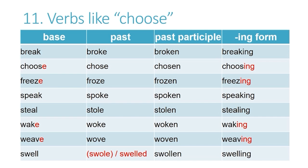Verbs like 'choose' shift to the same vowel sound in the past and the past participle. The difference is that in the past there is no UN ending, but in the past participle there is an UN or EN ending.